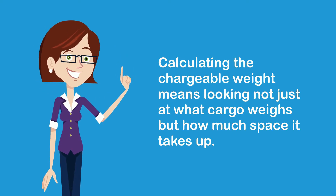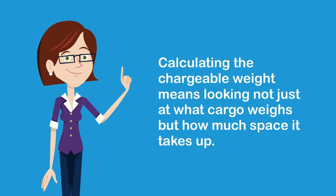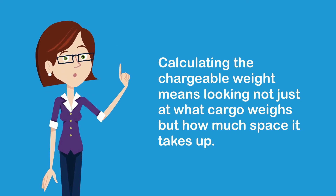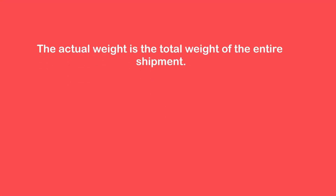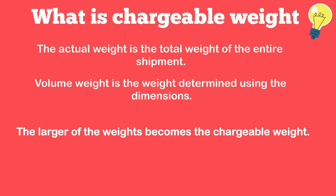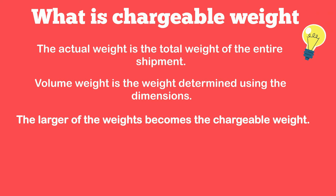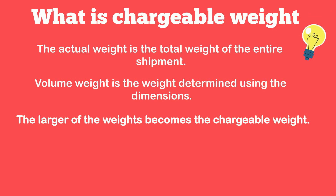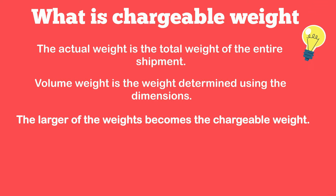Calculating chargeable weight means not just looking at how much a shipment weighs, but also how much room it takes up. When you are looking at a shipment, you have the actual weight — what the shipment actually weighs — and you have the volume weight, which is how much space the shipment actually takes up. The larger of the two is your chargeable weight. So the chargeable weight is always going to be the larger between the actual and the volume weights.